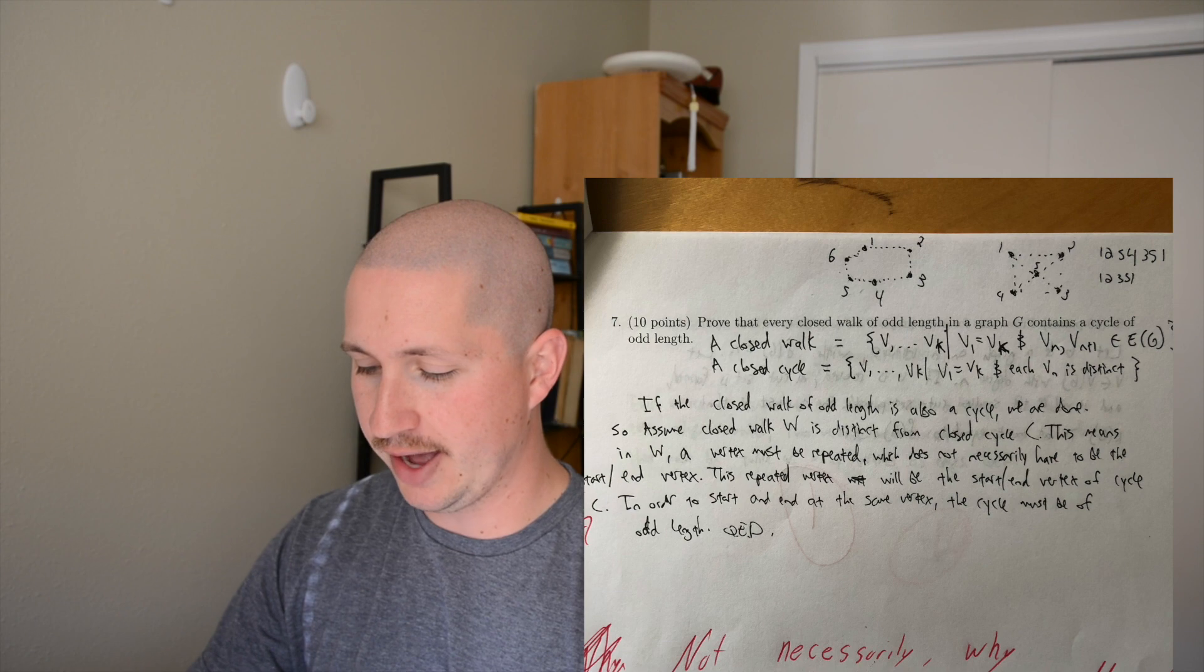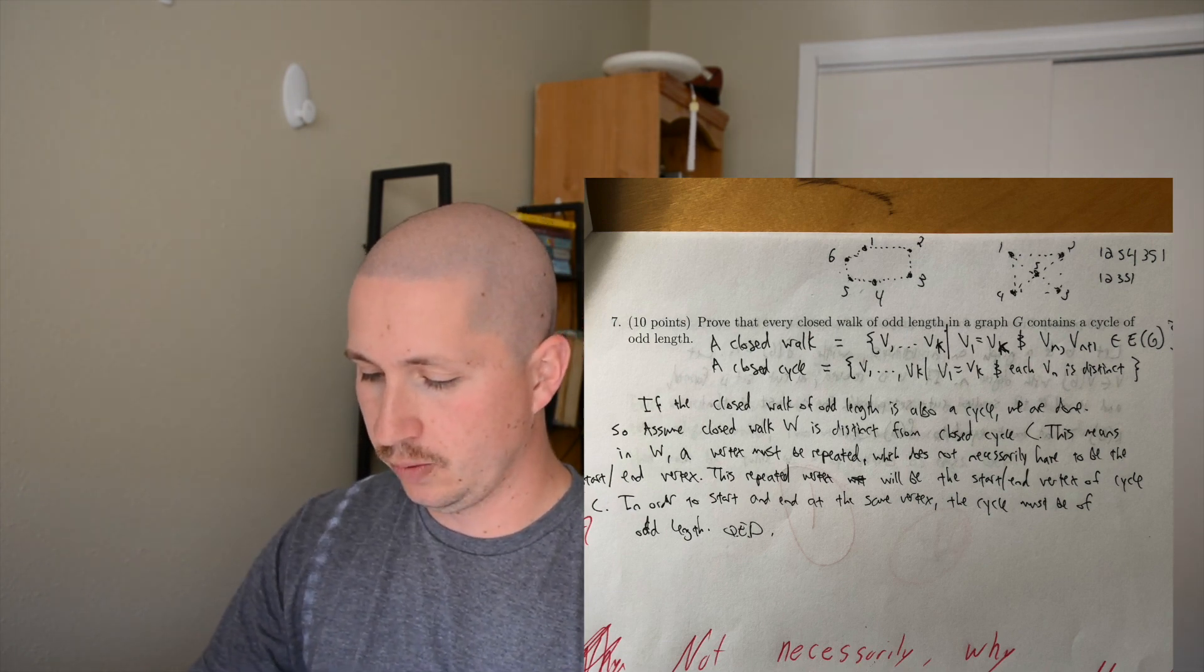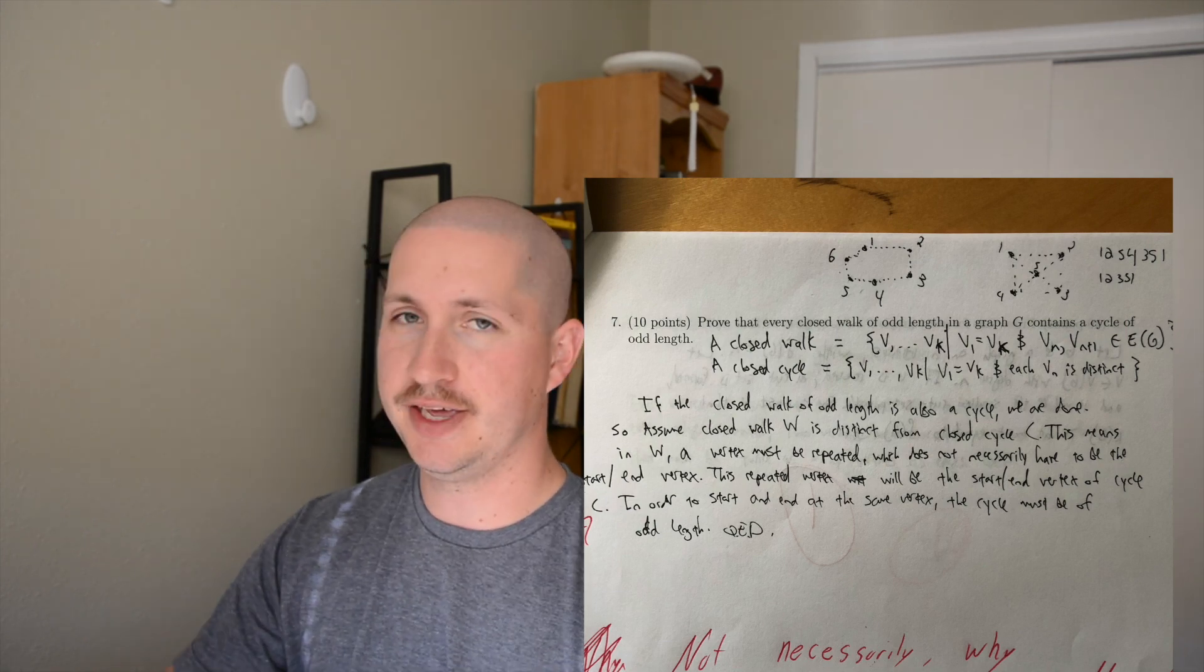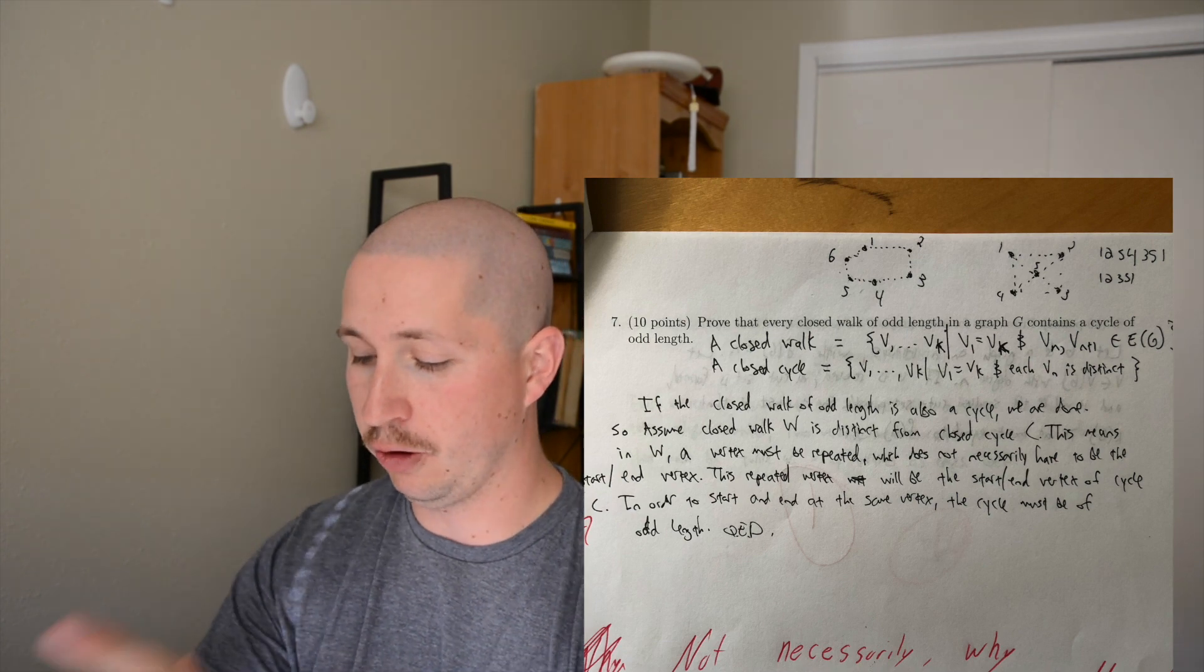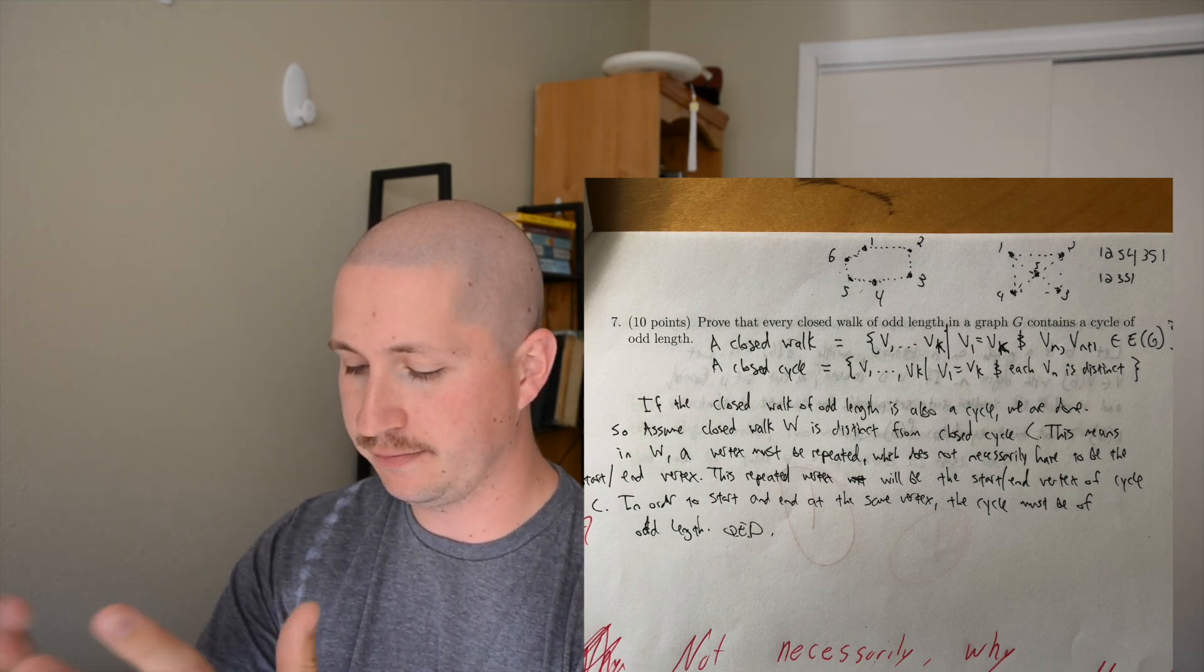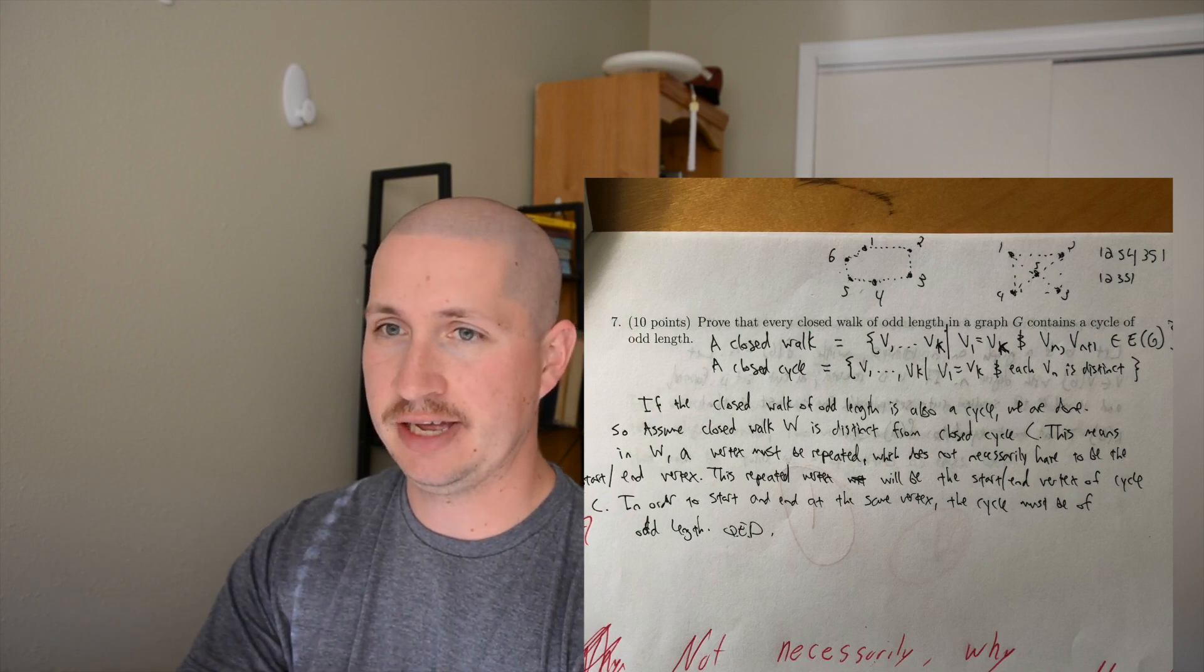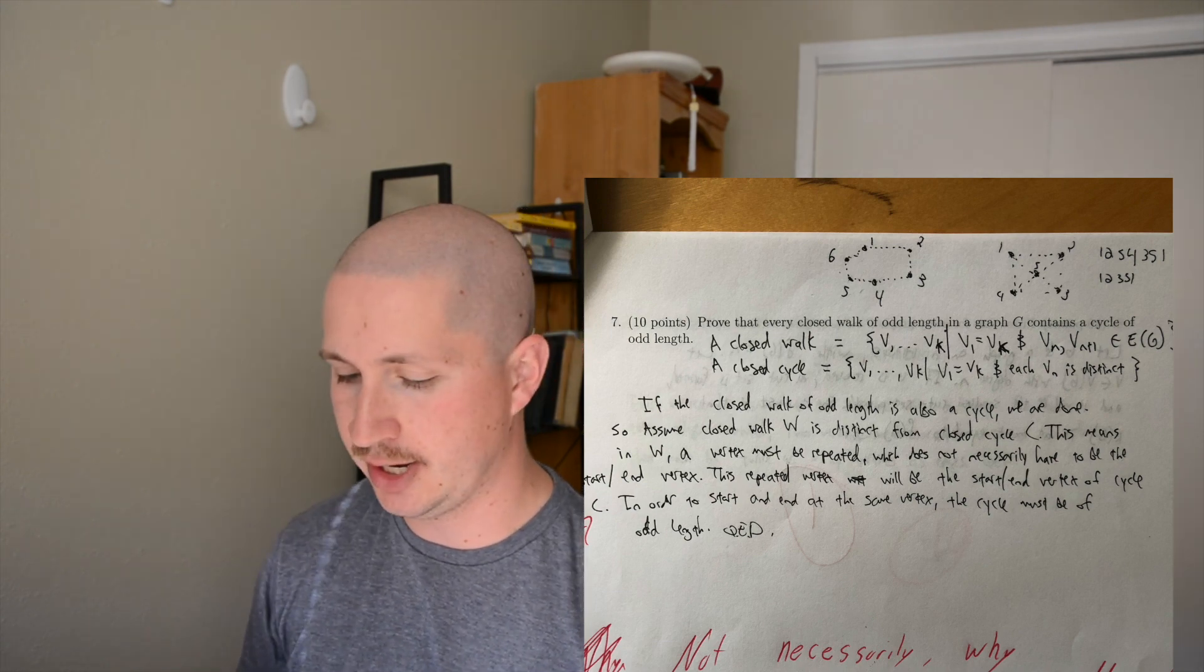Then I had number seven. Prove that every closed walk of odd length in a graph G contains a cycle of odd length. This one is a little bit more intensive. I started off with the definition of a closed walk and a closed cycle. A walk is just a sequence of vertices such that vn and vn+1 are connected by an edge or are an element of the edge set. I wrote it in set notation. A closed cycle is v1 to vk where v1 equals vk, which is to say the first and last vertices are the same, so it starts where it ends, and each vertex is distinct.